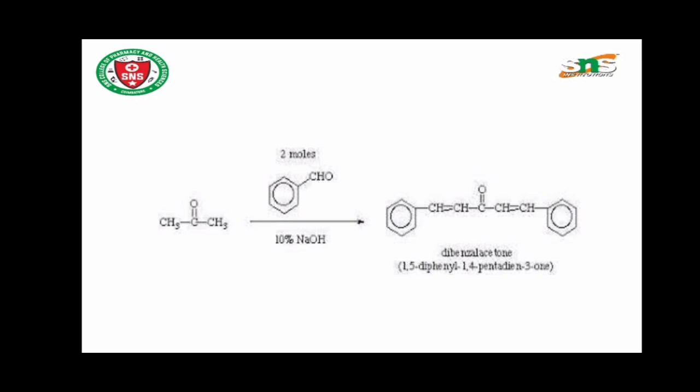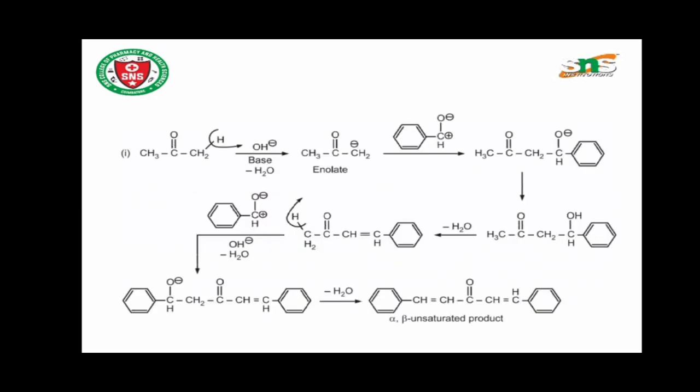This gives the product C6H5-CH=CH-CO-CH=CH-C6H5, which is known as dibenzalacetone. So benzaldehyde treated with acetone in the presence of sodium hydroxide will give dibenzalacetone.